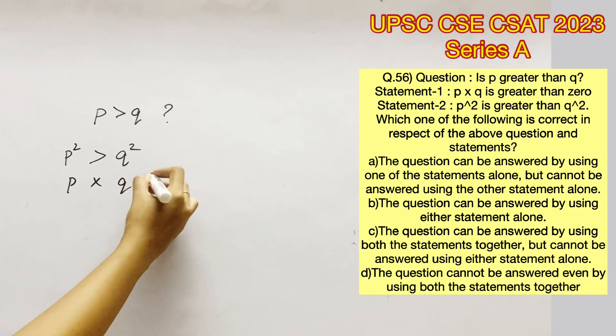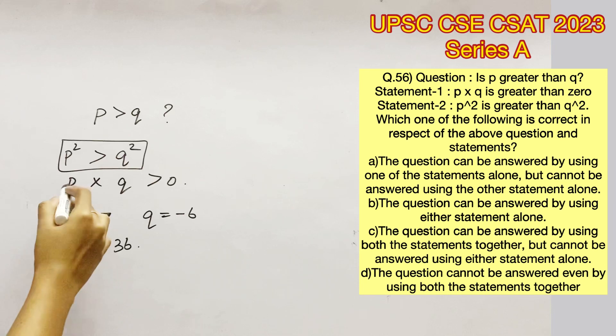Even if you take both the statements together, it is not sufficient to answer this question. For example, we take P as minus 7 and Q as minus 6. This will satisfy both the statements - P square will be greater than Q square and P into Q would be a positive number because negative into negative will give us a positive value. And in this case, P's value is lesser than Q's value.